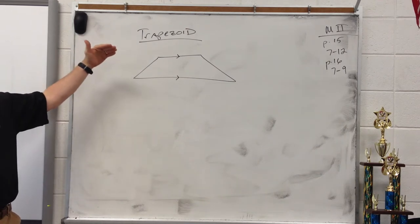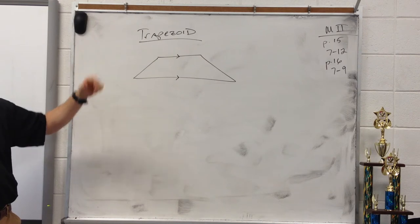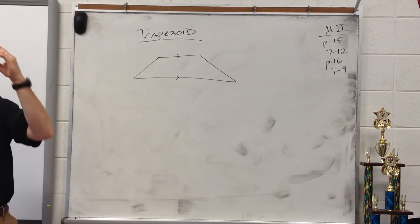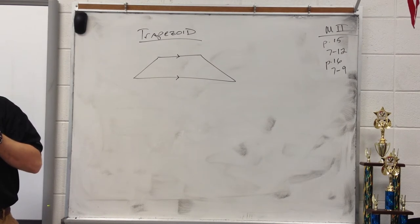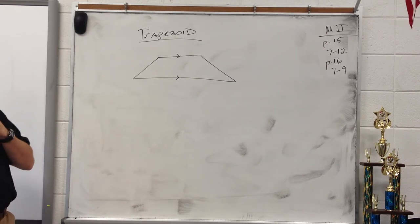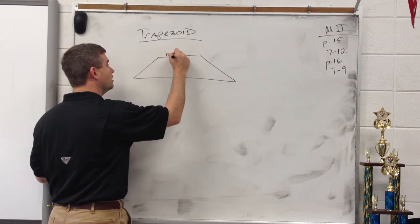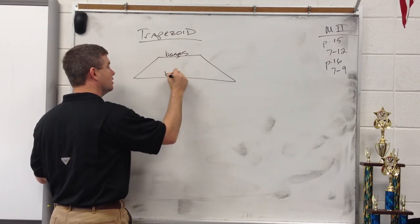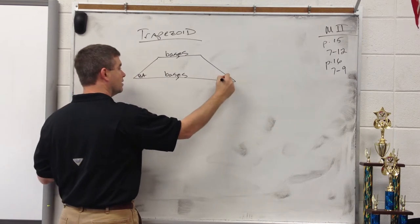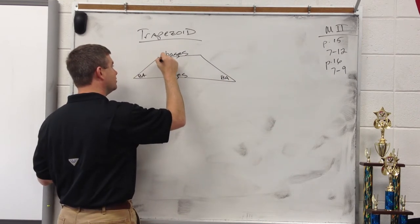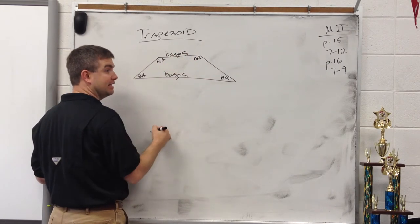A trapezoid is a quadrilateral with exactly one pair of parallel sides. It is a quadrilateral — meaning four sides — and it has exactly one pair of parallel sides. The parallel sides are the bases. For each of the bases of a trapezoid, there is a pair of base angles, which are the two angles that have the base as a side. These are base angles, and these are base angles.